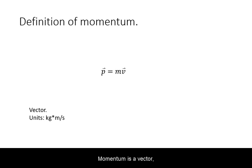Momentum is a vector, hence both magnitude and direction matter. It is designated by the symbol lowercase p and its units are kilograms times meters per second. There is no special name for this unit.